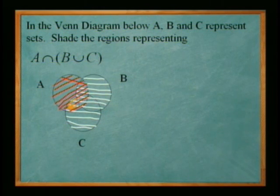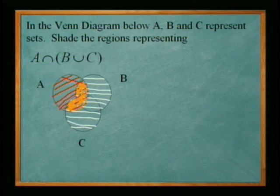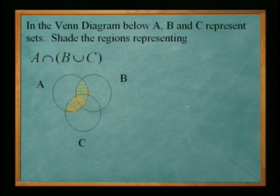All right, so that's basically this area inside here. So you end up just shading that region where the two overlap. So the orange would represent the final solution of A intersection of B union C.